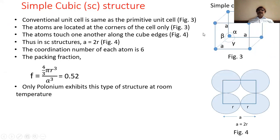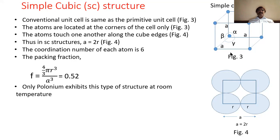In the simple cubic structure, atoms or lattice points are situated only at the eight corners. Every atom is shared by eight unit cells, so the effective number of atoms per unit cell is 8 × (1/8) = 1. Since the number of lattice points per unit cell is one, this is a primitive unit cell - the conventional unit cell is the same as the primitive unit cell.